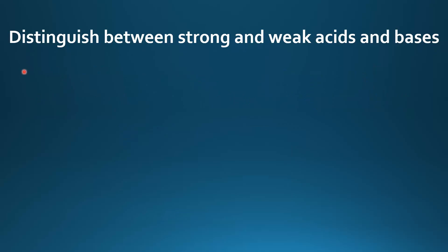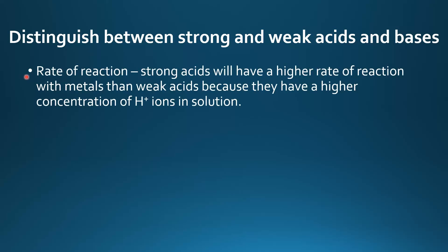There are two more ways to distinguish between a strong and weak acid and base. The first is rate of reaction: strong acids will have a higher rate of reaction with metals than weak acids because they have a higher concentration of hydrogen ions in solution. This example can only be used with strong and weak acids because they react with metals to form hydrogen gas.